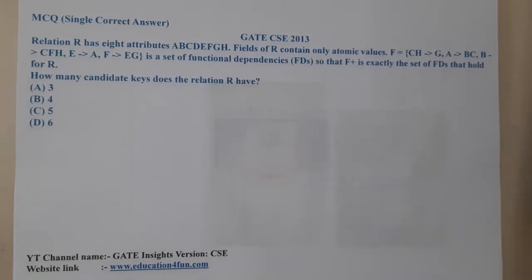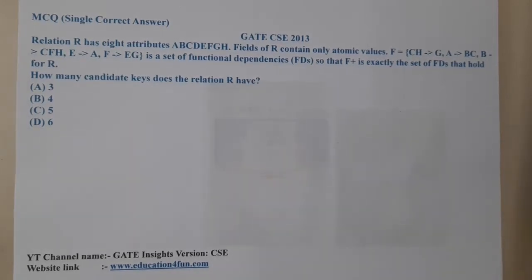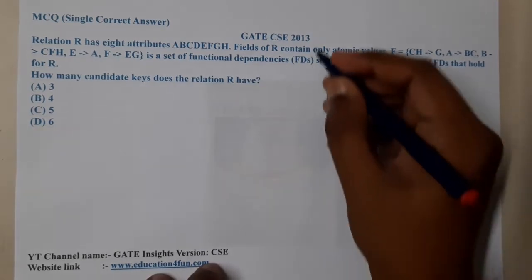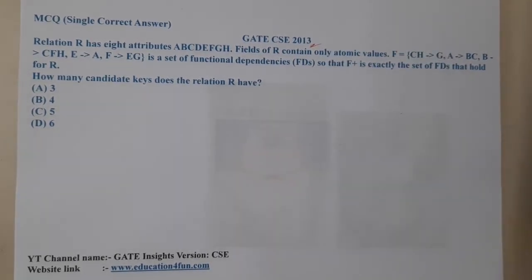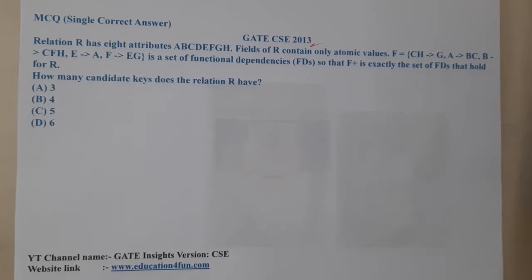Hello guys, we are back with our next lecture. In this lecture, let us go through the next question. This question belongs to GATE CSE 2003. The given question is: relation R has eight attributes.